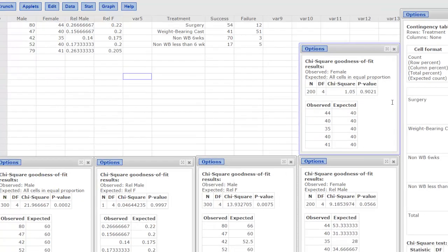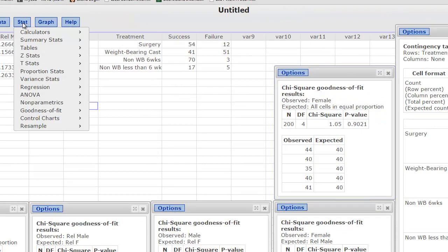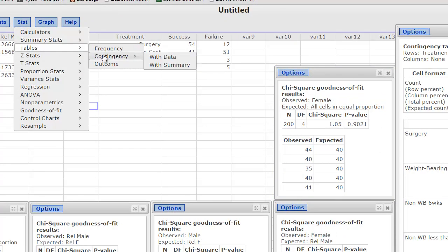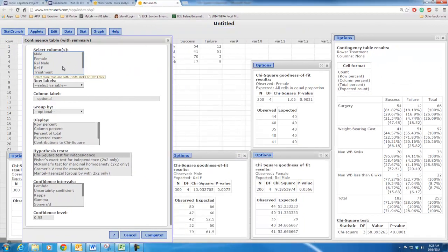For the contingency table version, the weight-bearing casts and surgery and all that stuff, you go stat, tables, contingency, with summary. I know that feels like that is data but it's not. Data would be raw data where you actually just had hundreds and hundreds and hundreds of rows of data and then each was categorized. Was it a success? Was it a failure? Did they have surgery? Did they have this? But we don't have that. We have summary.